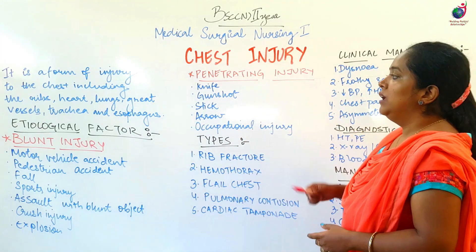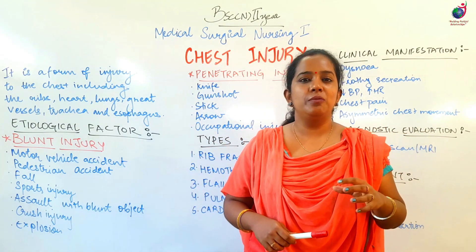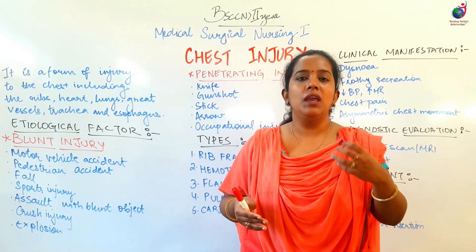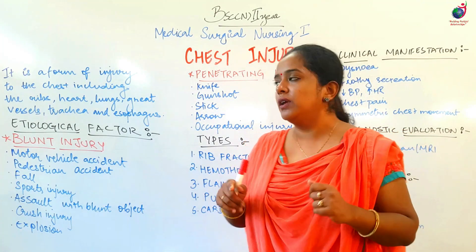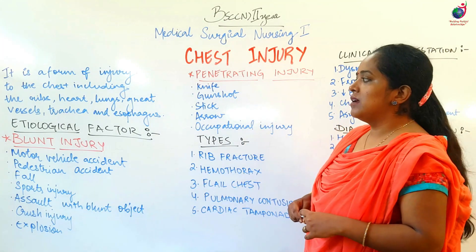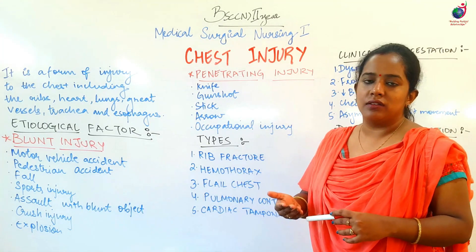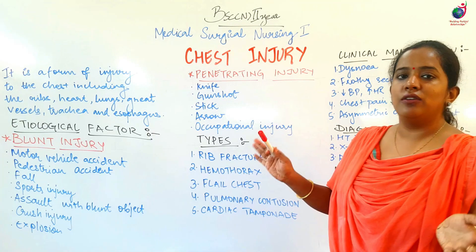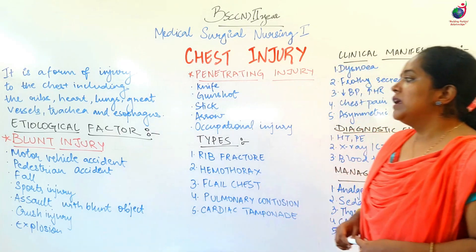Aaj hamaara topic hai chest injury. Chest injury ka matlab hai ki koi bhi aisi ek injury condition jis mein chest ke kisi bhi bhaag mein — heart mein, lungs mein, great vessels mein, ribs mein — kahin par bhi agar koi chot lag jati hai, toh that all comes under the term of chest injury. So it's a form of injury to the chest including the ribs, heart, lungs, great vessels, and also trachea and esophagus.